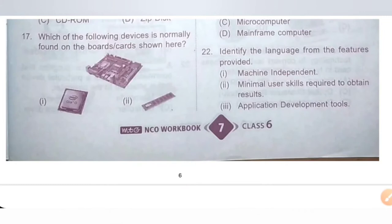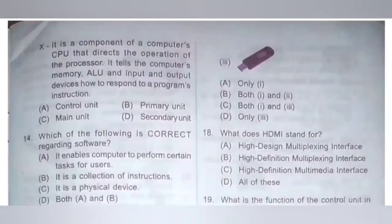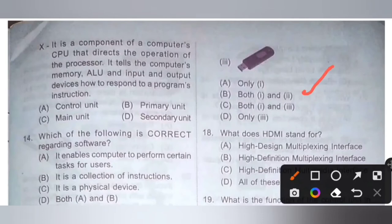Question 17: Which of the following devices is normally found on the board or card shown here? The given board is the motherboard. Options: 1. Processor, 2. RAM, 3. Pen drive. RAM and microprocessor are embedded onto the motherboard of a computer. Option B is the correct answer — microprocessor and RAM, both 1 and 2.